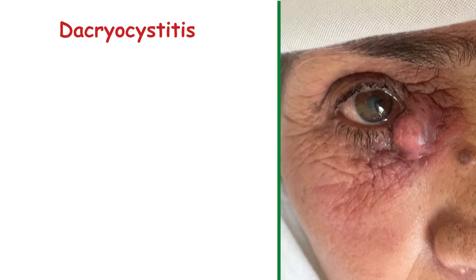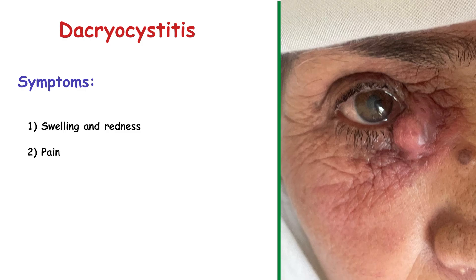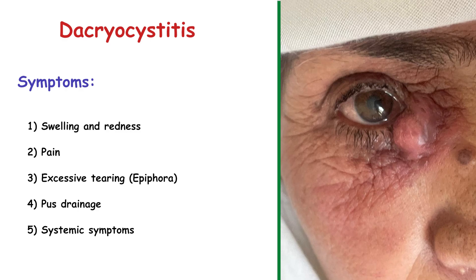The symptoms of dacryocystitis include swelling and redness around the inner corner of the eye, and pain in the affected area. In some cases, there is excessive tearing due to the inability to drain tears properly. Pus may be discharged from the eye or through the puncta. In some cases, the infection can cause systemic symptoms like fever.